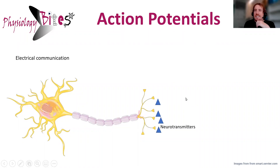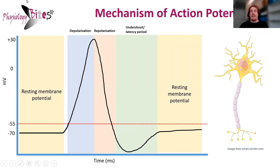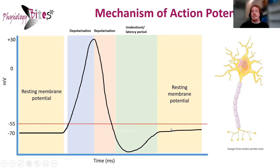But what actually is an action potential? What does it look like when we look at a single action potential? It's often represented like this. We can see we have our resting membrane potential, a depolarization phase, a repolarization, and then it returns back to normal. All of this happens very quickly, within a few milliseconds.